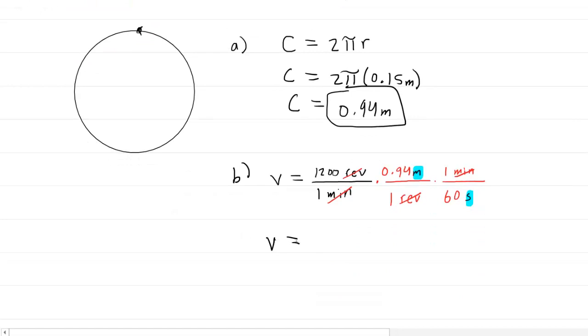So now you pick up your calculator and you punch this in. And you're basically multiplying 1,200 by the 0.94 and then dividing by 60, and you end up with about 18.8 meters per second. So this would be the correct answer to part B.